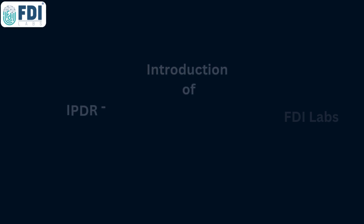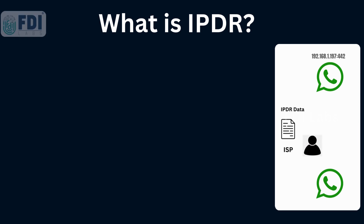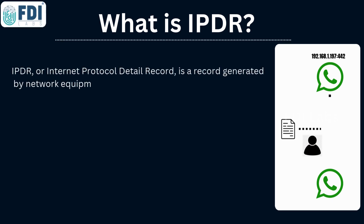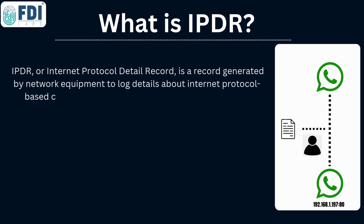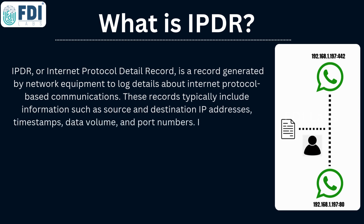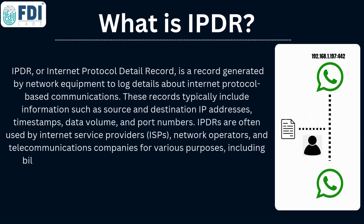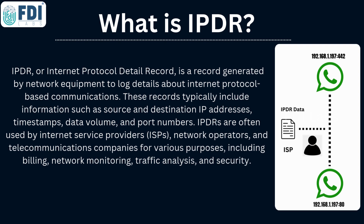IPDR, or Internet Protocol Detail Record, is a term used to describe a digital log that network devices create to record information regarding communication over the internet. These logs typically include information on the origin and destination of data, the time of the event, the amount of data delivered, and the ports that were used.